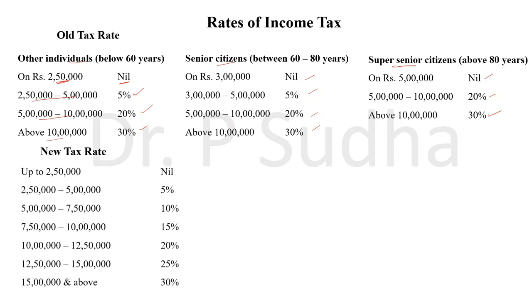What is the new tax rate? As per the new tax rate, we are not going to classify individuals based on age. Whatever his age, irrespective of age, there is only one tax rate. In the old tax rate, we differentiate rates based on the age of the individual, but as per the new tax rate there is no differentiation. Whatever his age, he has to pay this tax. The first 2,50,000 is nil.